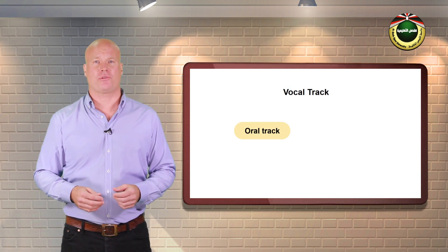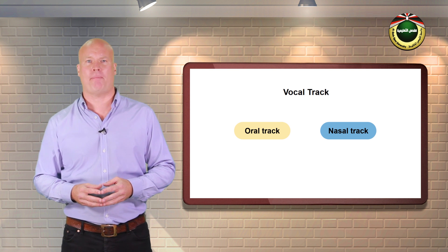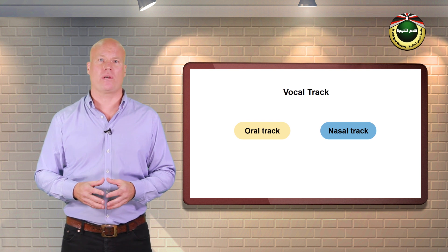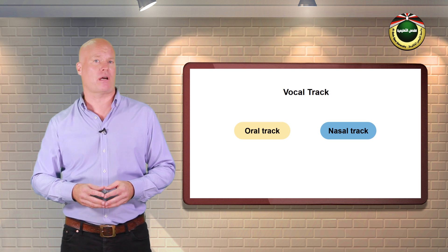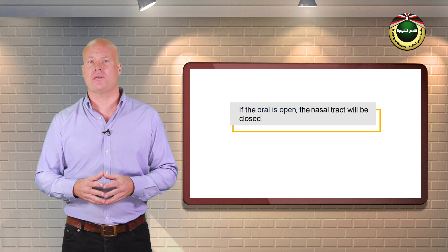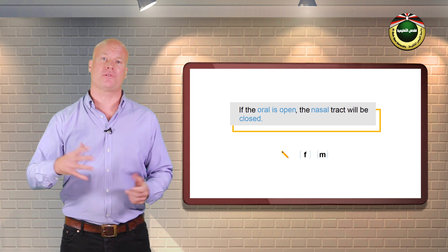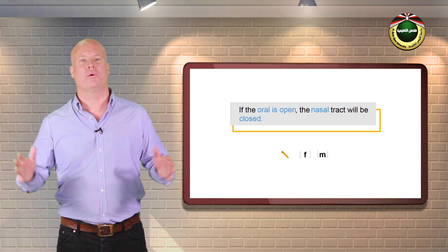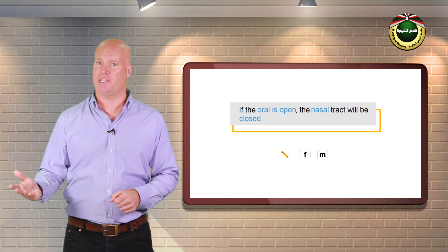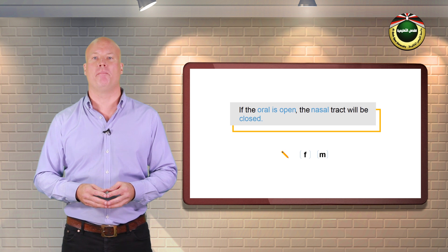The oral and nasal tracks. When air is released from the larynx, it passes through the vocal track, which consists of two main parts: the oral track inside the mouth, and the pharynx and the nasal track within the nose. One of these two tracks is open and the other closed. If the oral is open, the nasal track will be closed. The opposite is equally true. Try producing f and mm.